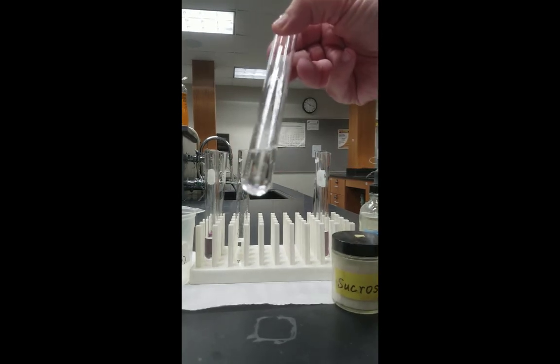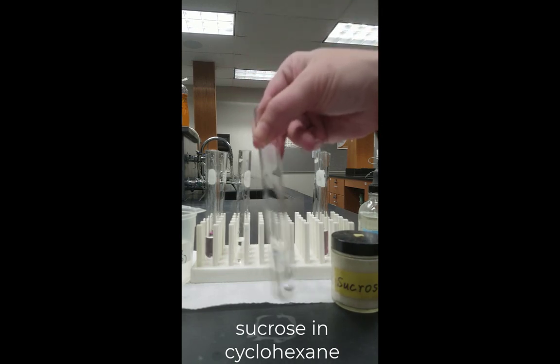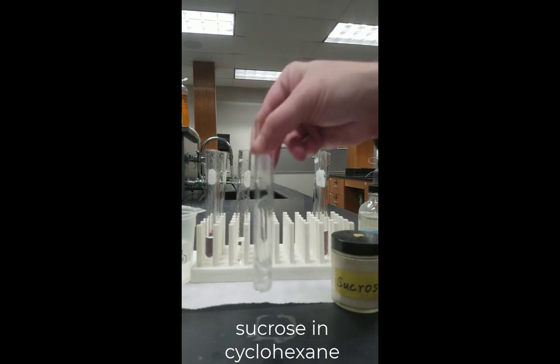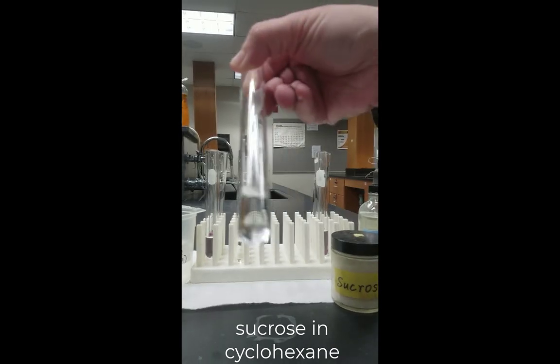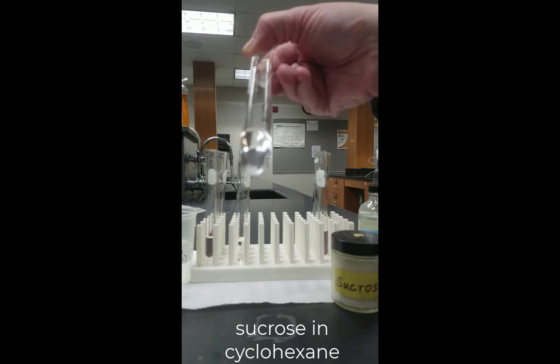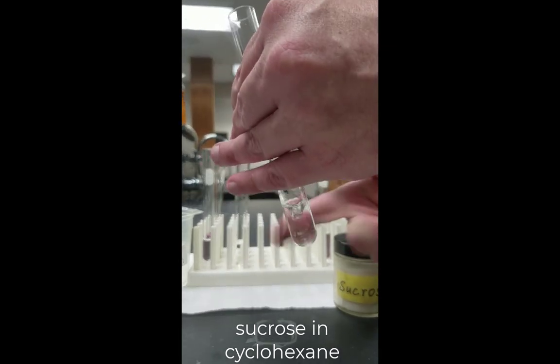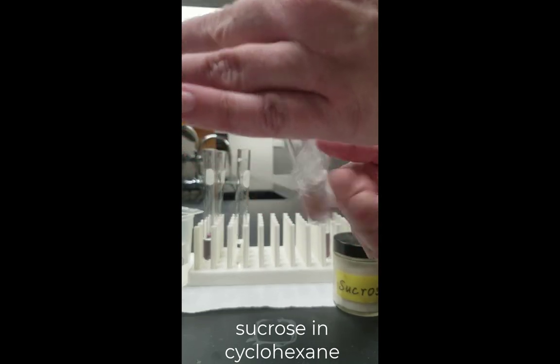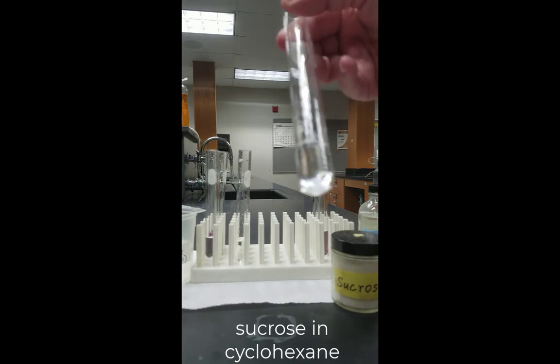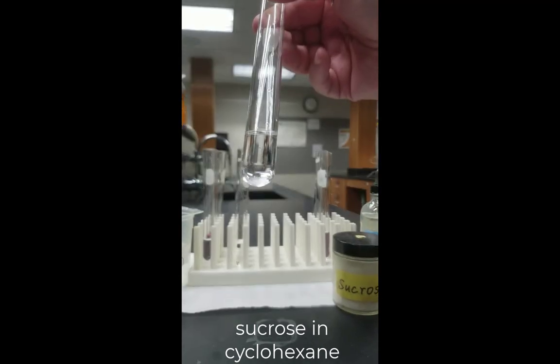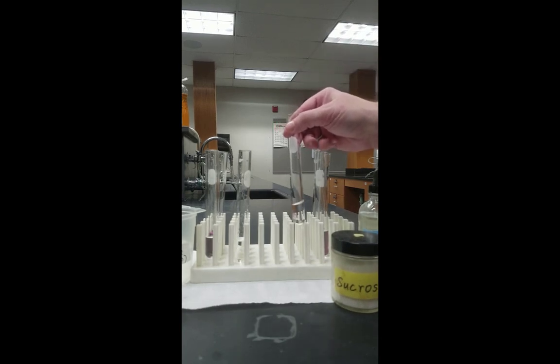Doing the same with the cyclohexane. And notice that there was some solid there in the bottom of the tube. Now give it some really good agitation. And if you look at the bottom, there still seems to be some solid. Now, whatever we did for the water, we really need to do for the cyclohexane. So again, we're going to give it a really good shaking, agitating there to see if that helps. And not really. If you notice very carefully, the solid sucrose still remains in the bottom of the test tube.